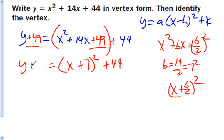Then I have plus 44 equals y plus 49. You can tell it's starting to look close to the standard form. I've got a y equals. Here's what I need, but I have y plus 49 equals. I have this parenthesis, x minus h squared, and then I have this k.